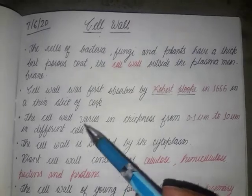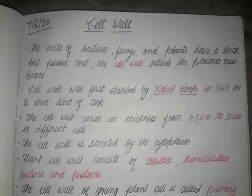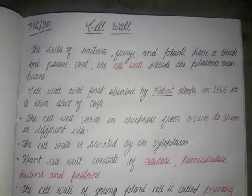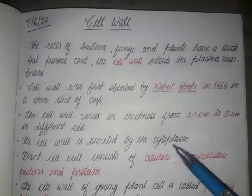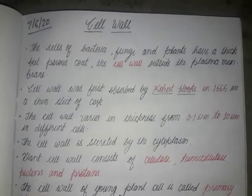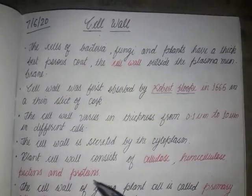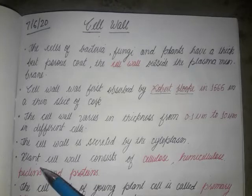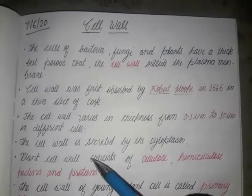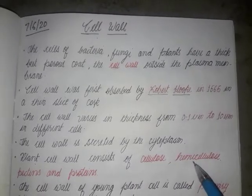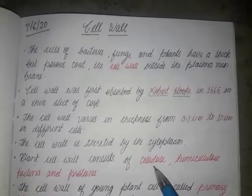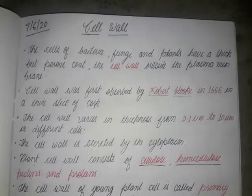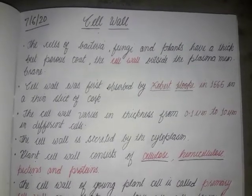The cell wall is secreted by the cytoplasm — that is an important point. In the case of the plant cell wall, the cell wall consists of cellulose, hemicellulose, pectins, and proteins. So these four types of materials make up the cell wall: cellulose, hemicellulose, pectins, and proteins.